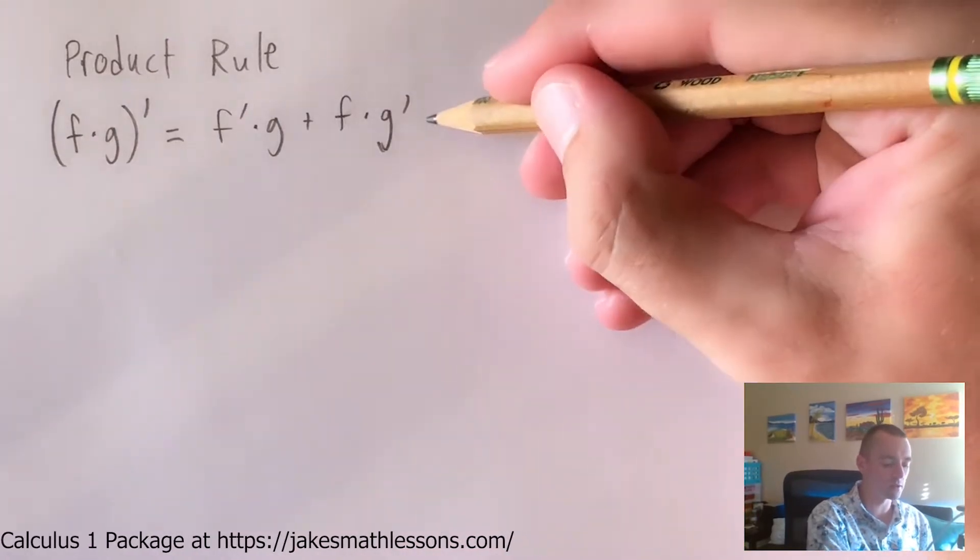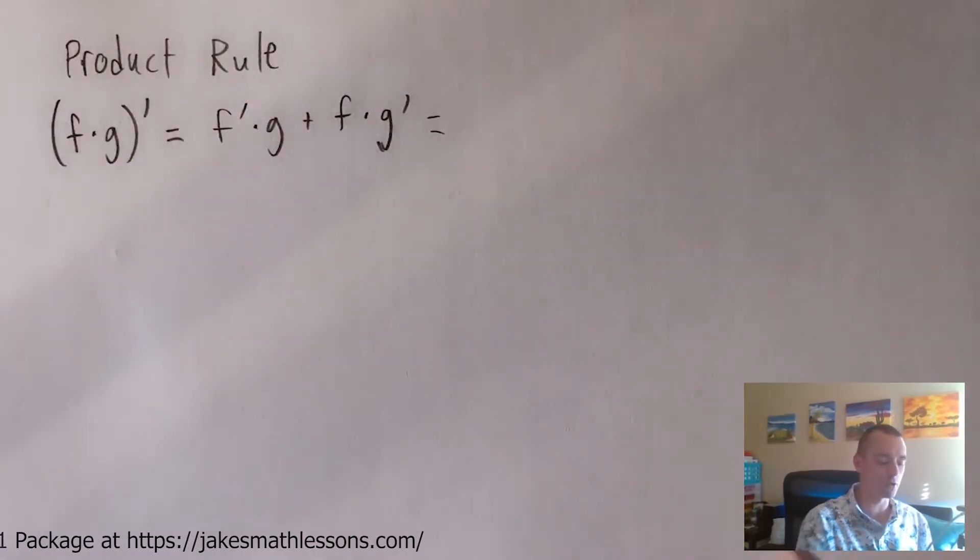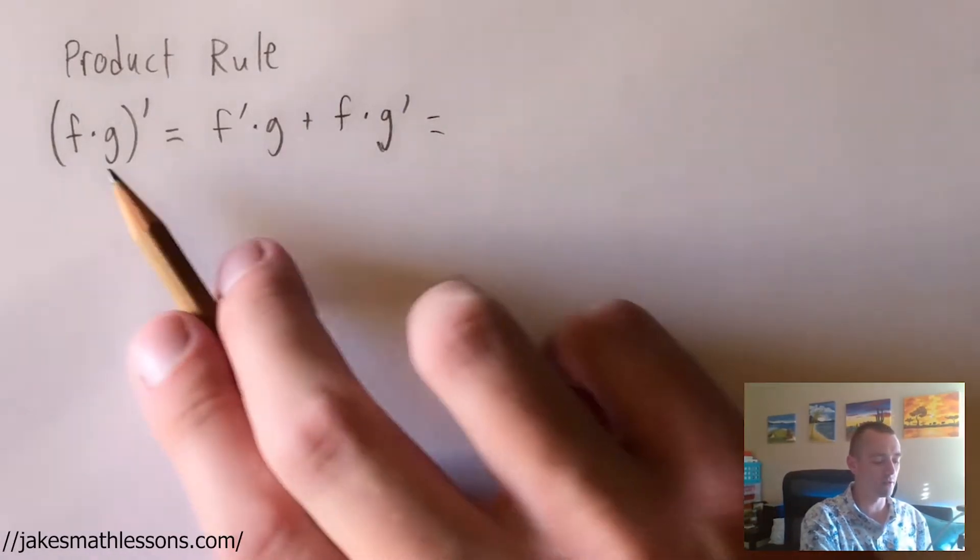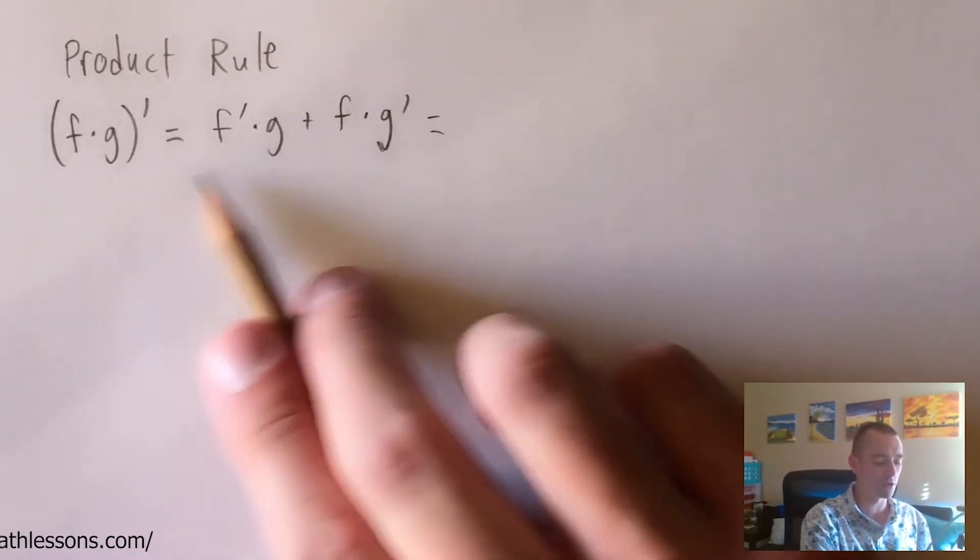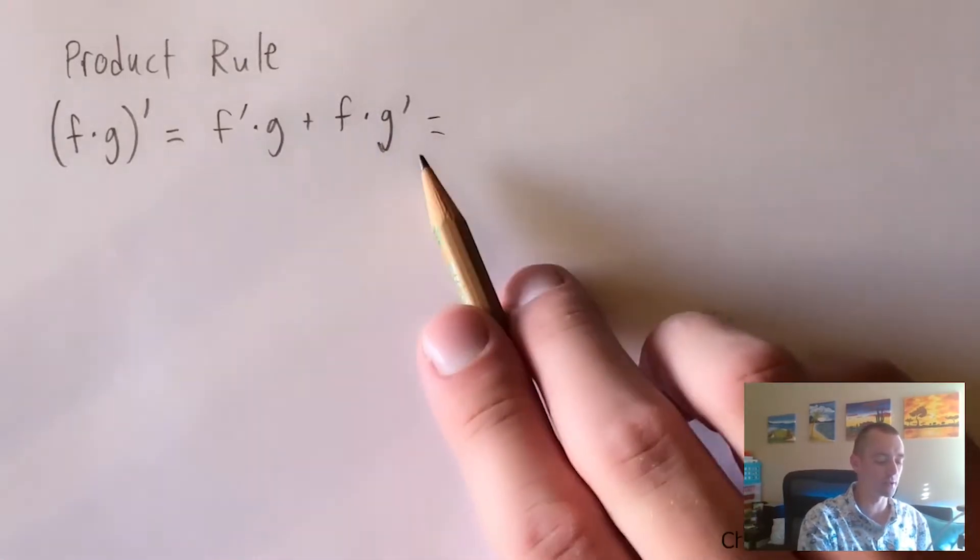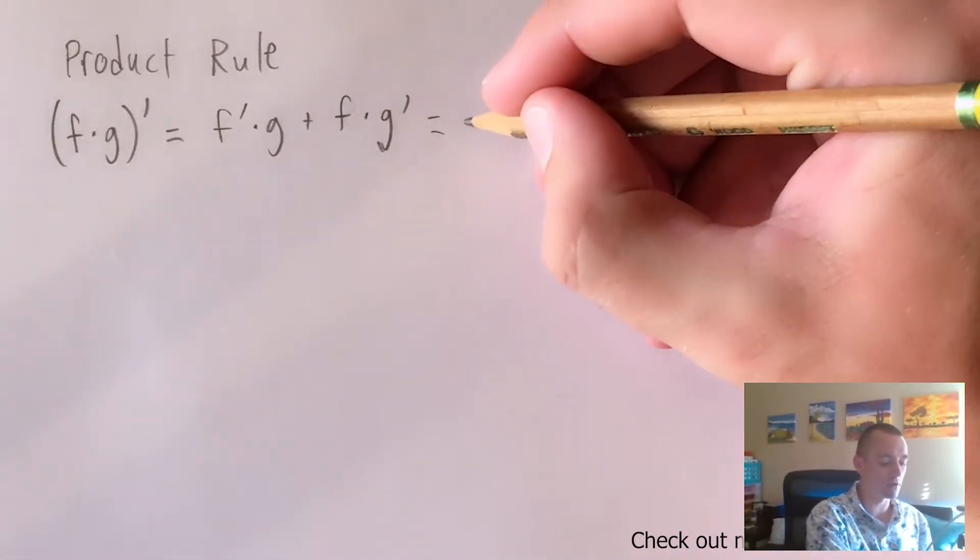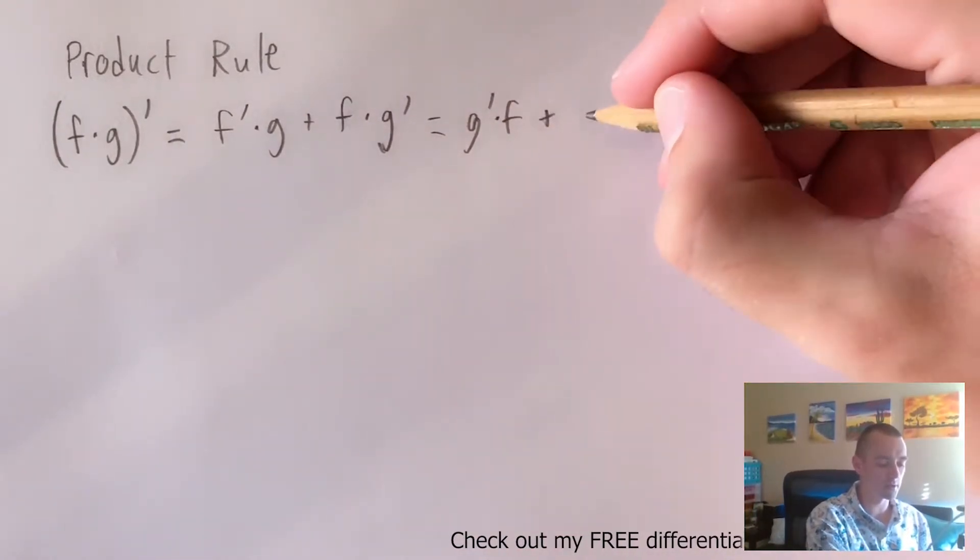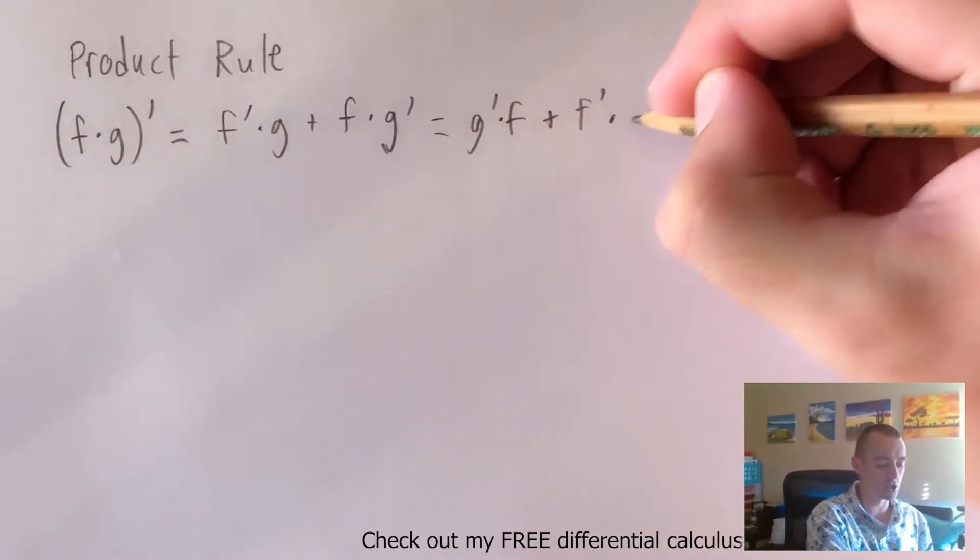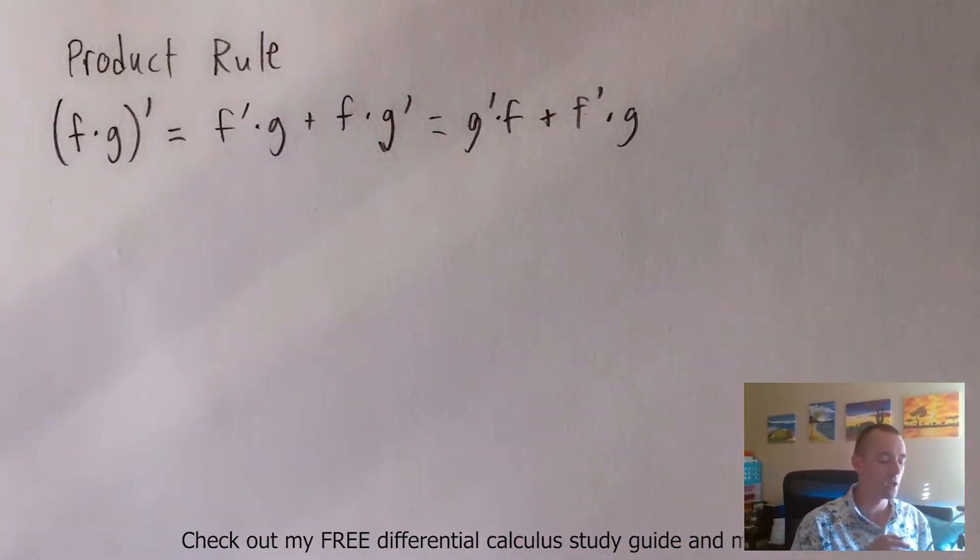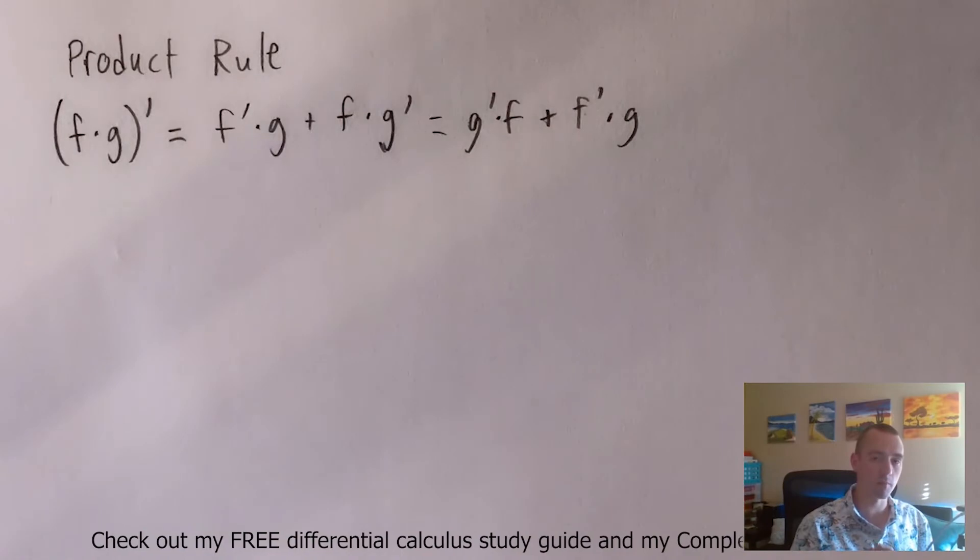So basically there's a bunch of different forms that you could write this same formula in. The key is that you're multiplying the derivative of one thing times the original of the other thing, and then adding in the original of the first thing times the derivative of the second thing. So theoretically, we could also write this as g prime times f plus f prime times g. It really doesn't matter as long as you're kind of cross multiplying those. So let me show you what I mean by this by showing you an example.